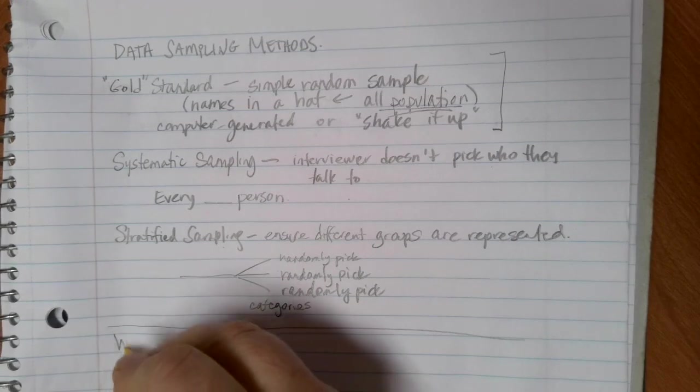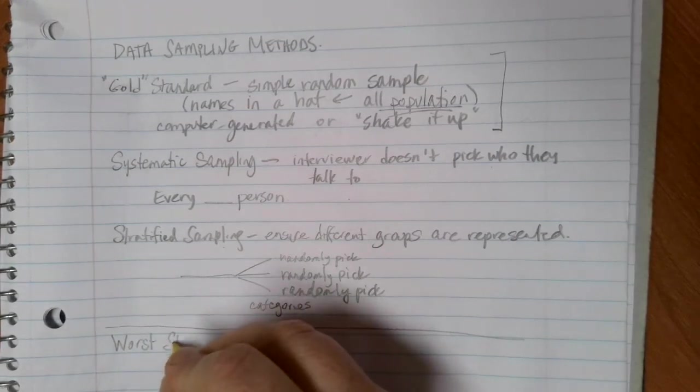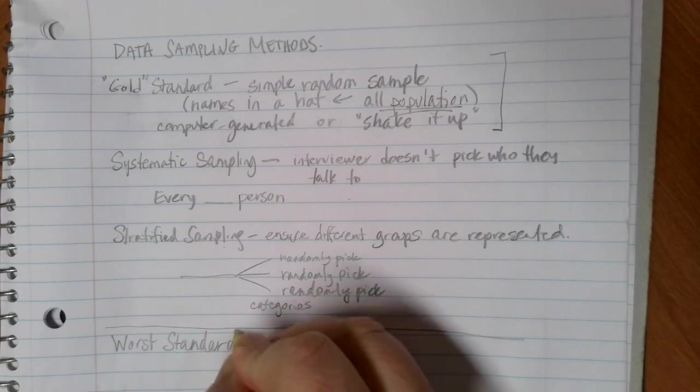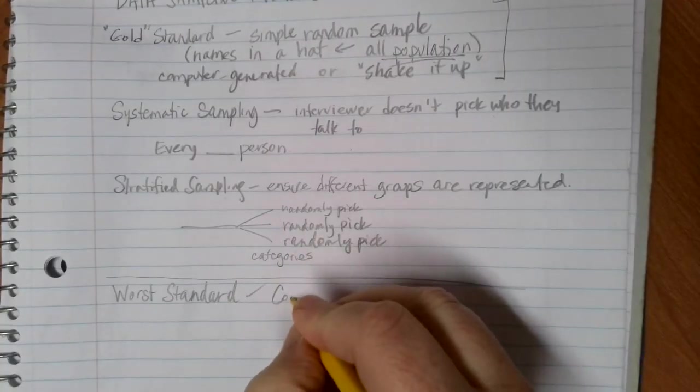Our worst case of how we can conduct random samples is something that we call convenience sampling.